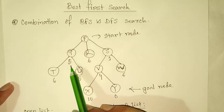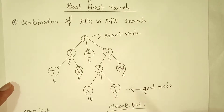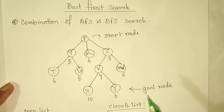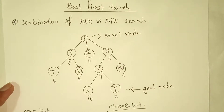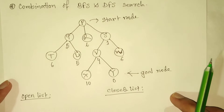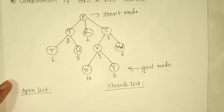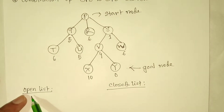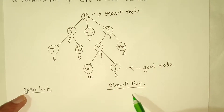We have a start node P and we have to reach our goal node Y. First, we have to remember that in Best First Search algorithm we use two lists to perform this algorithm: number one is the open list and number two is the closed list.